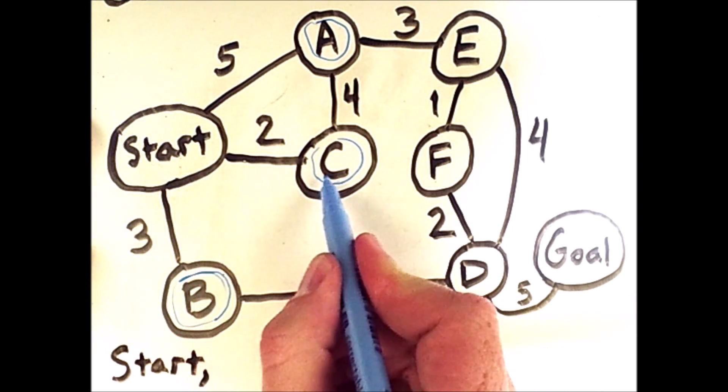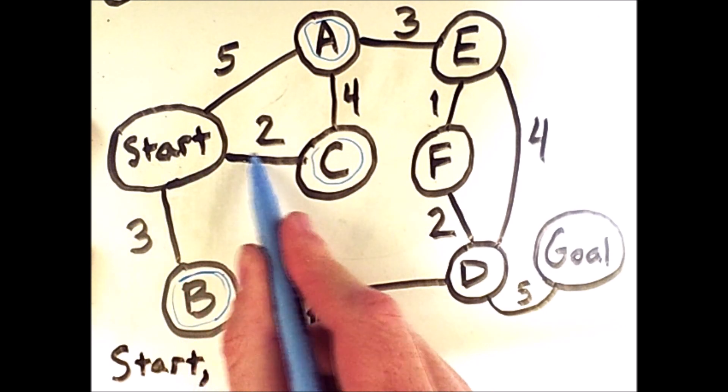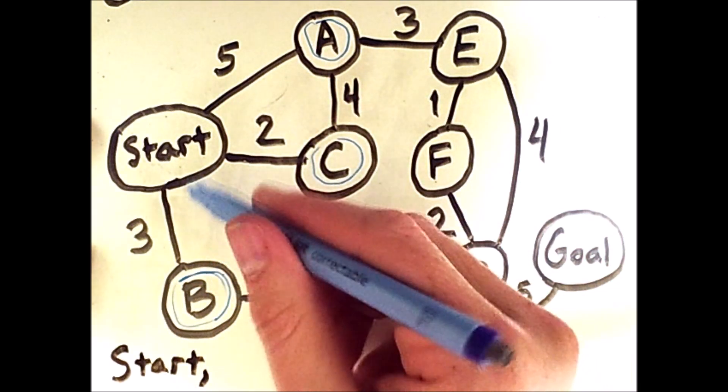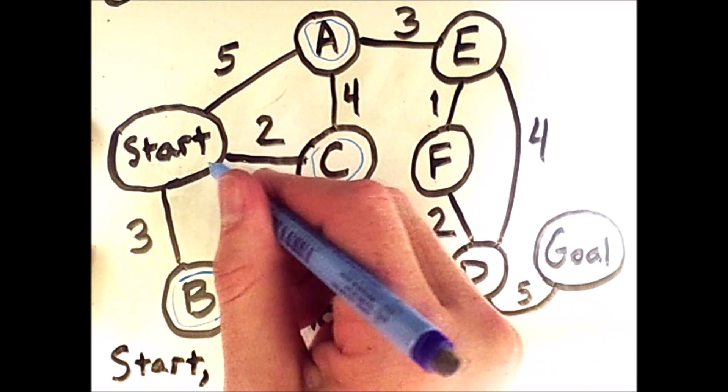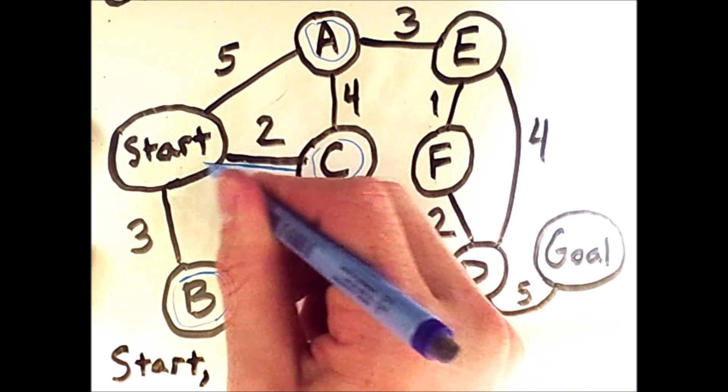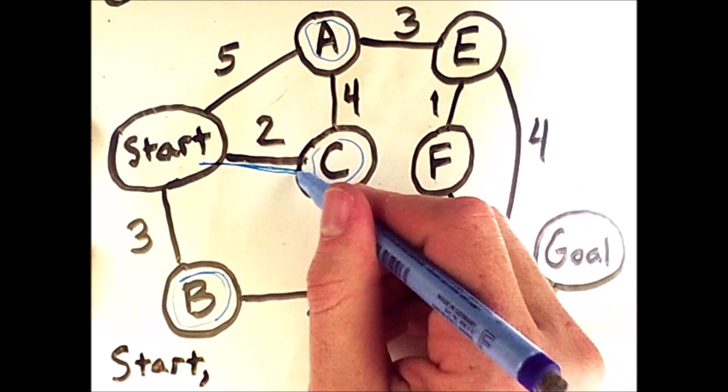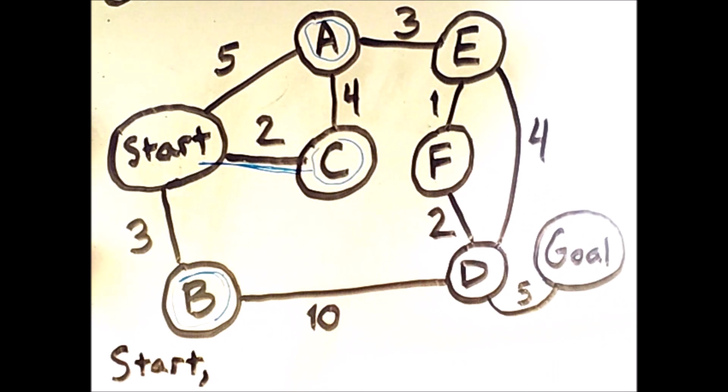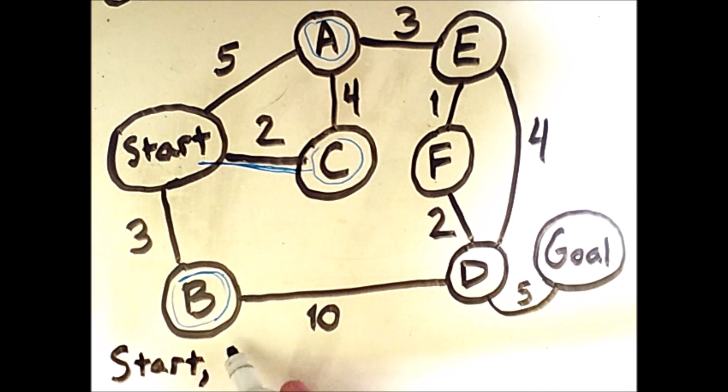The cost to reach C from the start is 2. The cost to reach A is 5, and the cost to reach B is 3. Therefore, via this route here, we will visit C next with a cost of 2. So we will add C to our list of visited states.